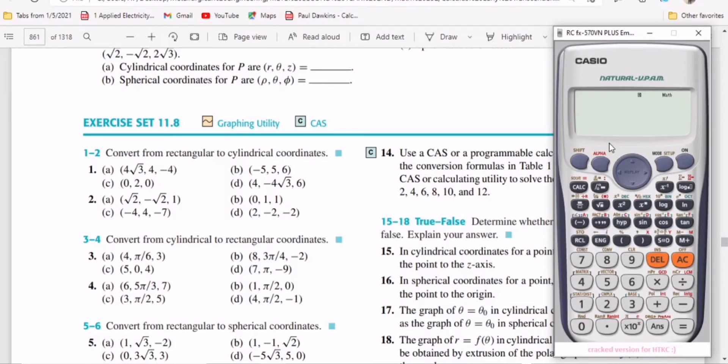Let's check question number 1a. We're supposed to convert (4√3, 4, -4) to cylindrical coordinates. We can do this using the calculator. Let's check how. On your calculator we have something called POL.